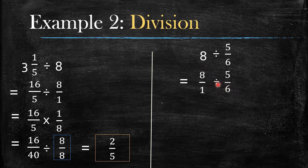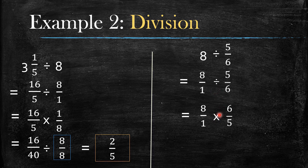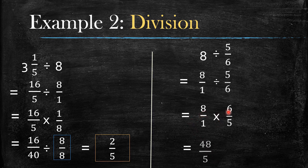From this point, change the division sign to a multiplication sign. So it becomes 8 over 1 multiplied by 6 over 5. It is 6 over 5 because you changed the sign from division to multiplication, so the numerator becomes the denominator and the denominator becomes the numerator. Then 8 times 6 gives you 48, and 1 times 5 gives you 5.